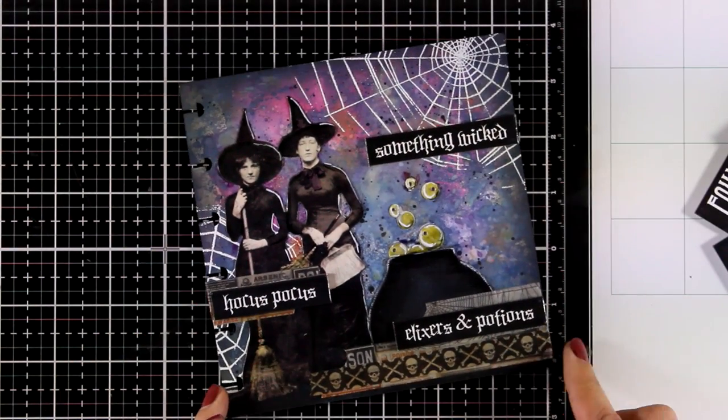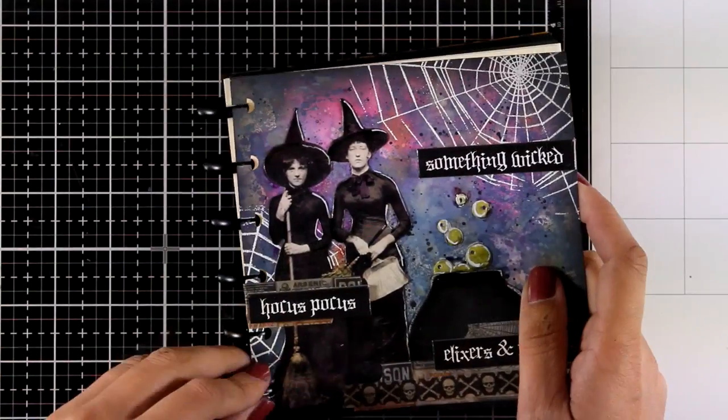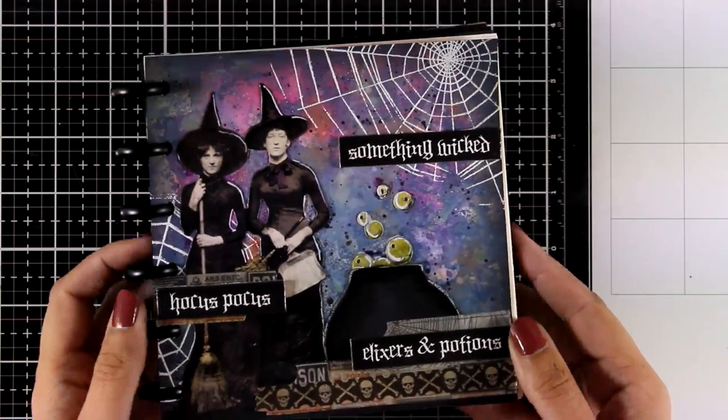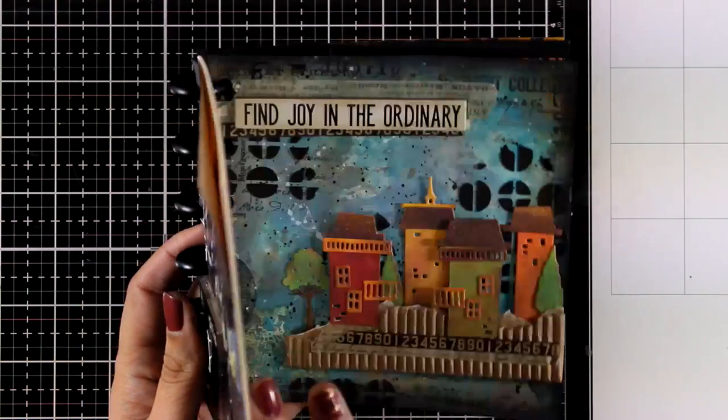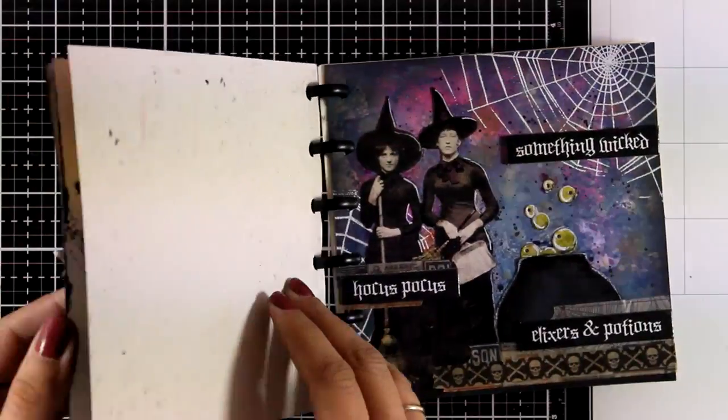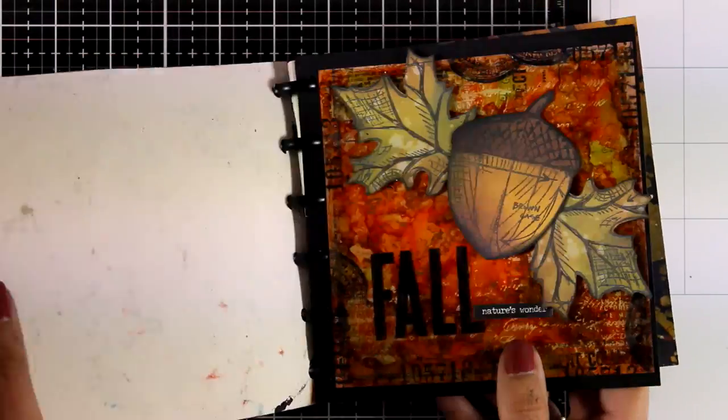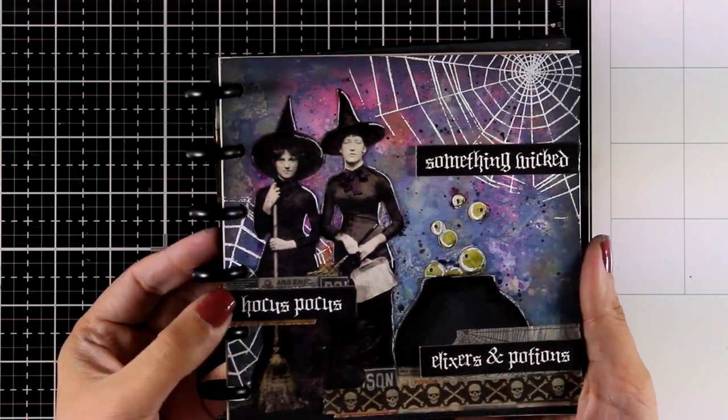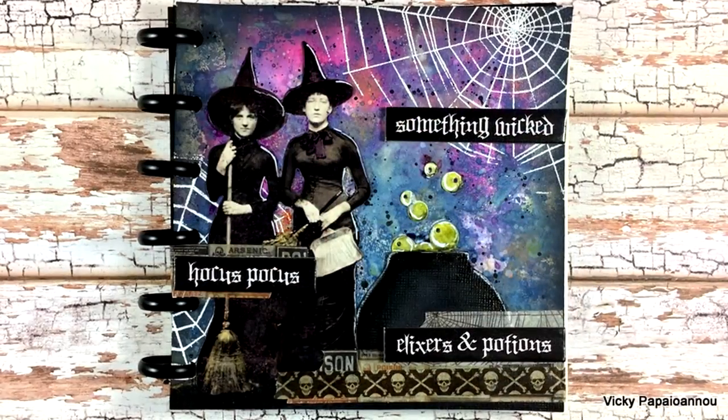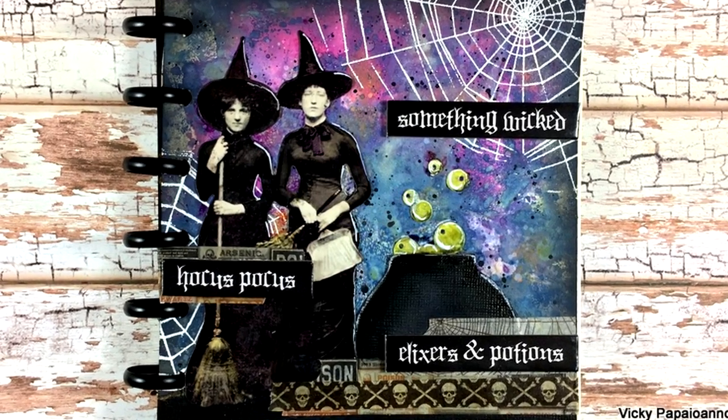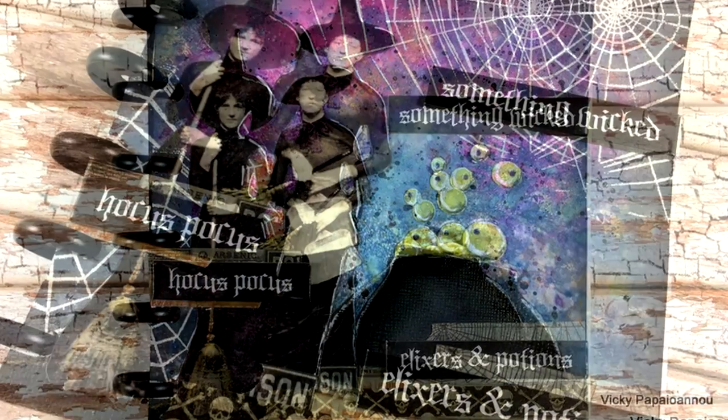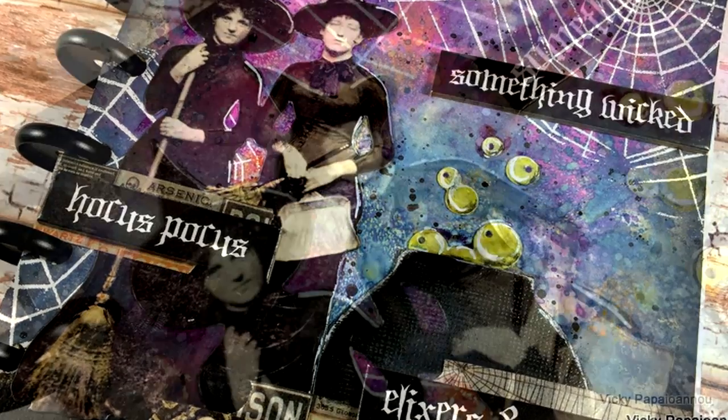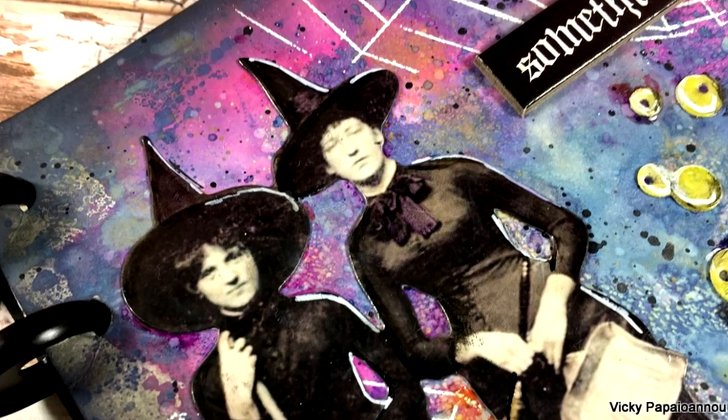So this is my page already. All I need to do is to put it back on my disc bound journal. And I absolutely love how this journal is coming along. I love the 6x6 size and I feel like I can work on more pages during the week. So thank you all for watching. I hope you had fun and you got inspired to create some Halloween projects. Here are some close-up photos on the page that I made for today. Don't forget that you will find the full list of all the supplies that I used down below in the description area as well as on my blog. And I'll see you all next time.